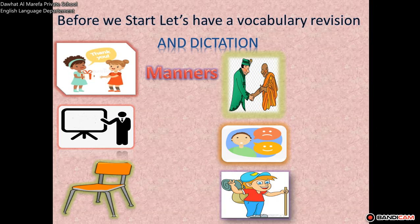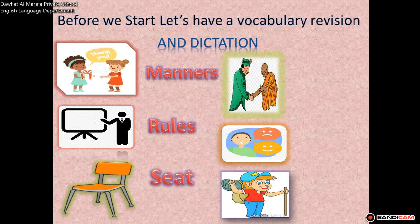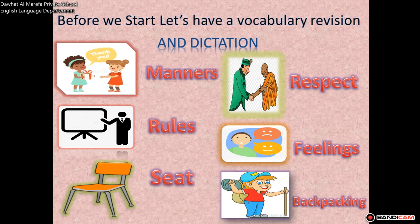If you didn't spell them correctly, you have to write each misspelled word three times to make sure you spell them correctly. The words for this part are: manners, rules, seat, respect, feelings, backpacking.